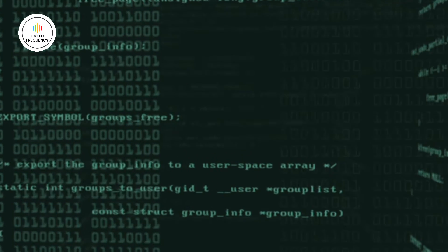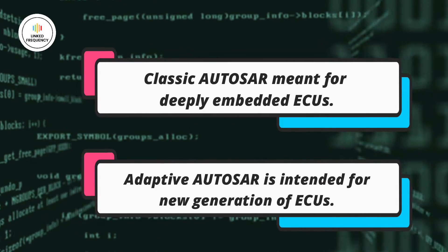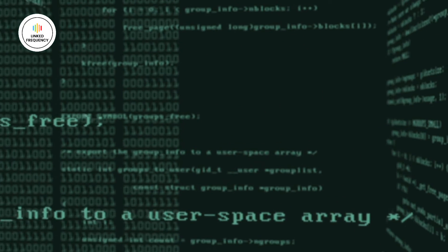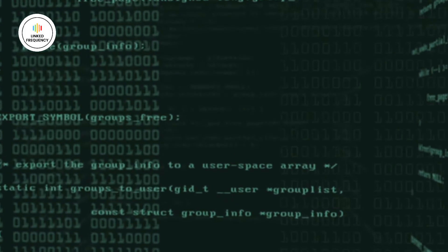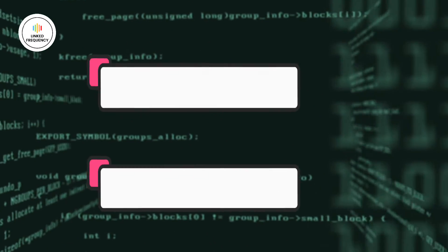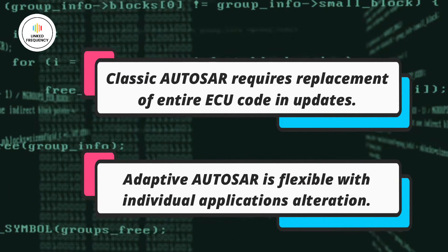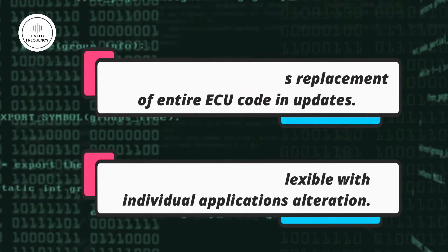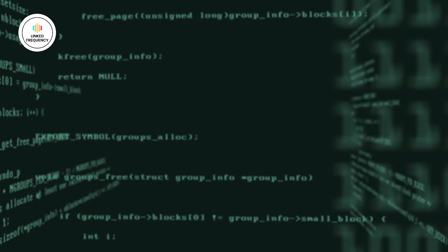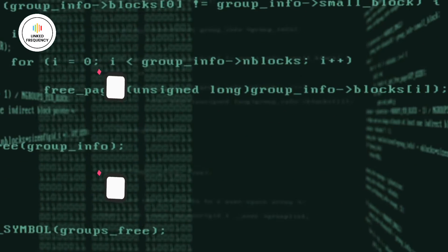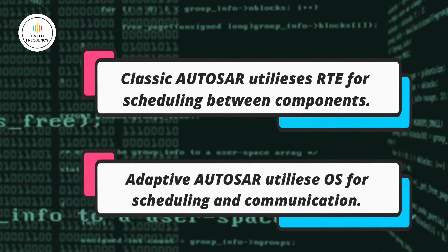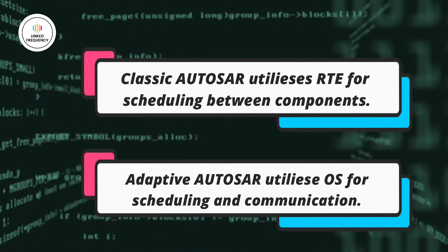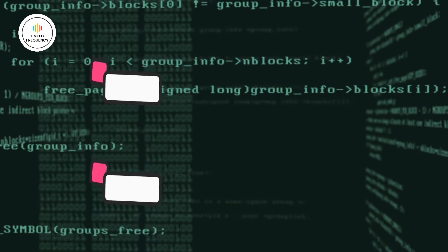The third difference is based on the ECU: classic AUTOSAR is meant for deeply embedded ECUs, whereas adaptive AUTOSAR is intended for a new generation of ECUs. The fourth difference is based on update management: an update in the classic platform implies replacement of the entire ECU code, whereas the adaptive platform offers the option of removing, updating, or adding individual applications. The fifth difference is based on scheduling: in classic AUTOSAR, applications utilize the AUTOSAR RTE for scheduling of software components and communication between them, whereas adaptive AUTOSAR applications utilize the operating system for scheduling and communication.